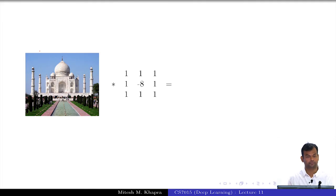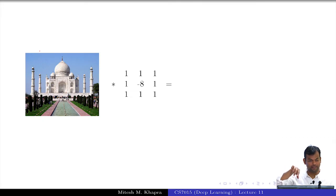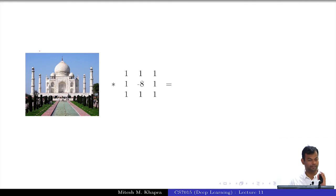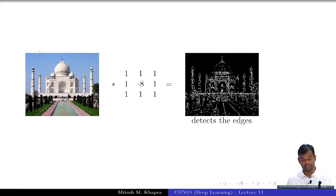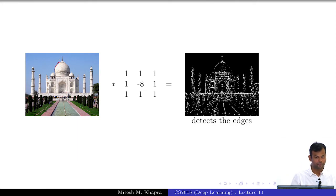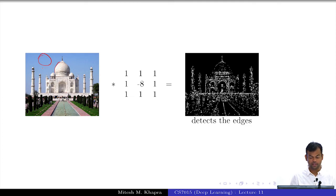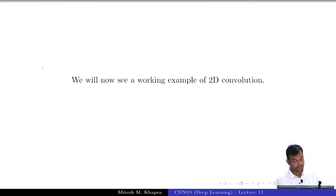Consider the next kernel: when will it produce a zero output? When all neighbors are the same as the current pixel. When will it produce non-zero output? At boundaries — where neighbors differ from the current pixel. This is basically an edge detector. It takes the sum of 8 neighbors and subtracts the current value 8 times; if all neighbors equal the current pixel, you get zero. At edges, you get non-zero values.